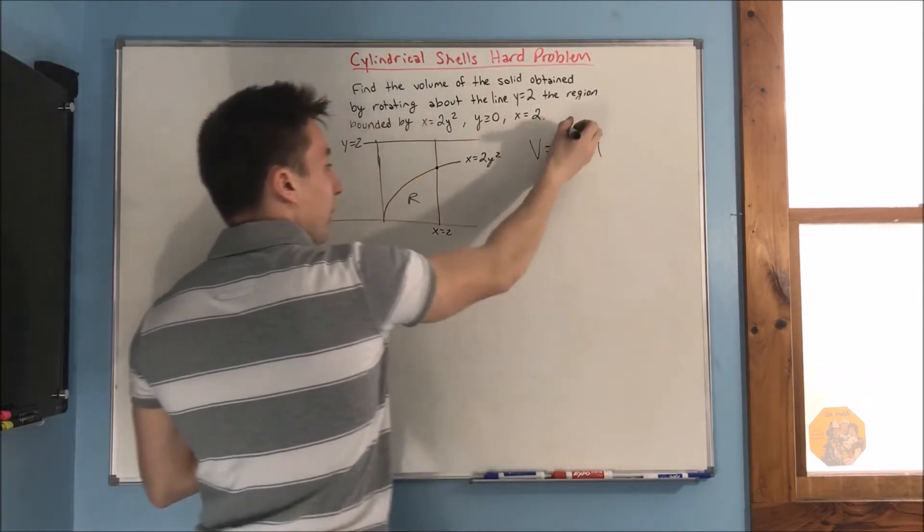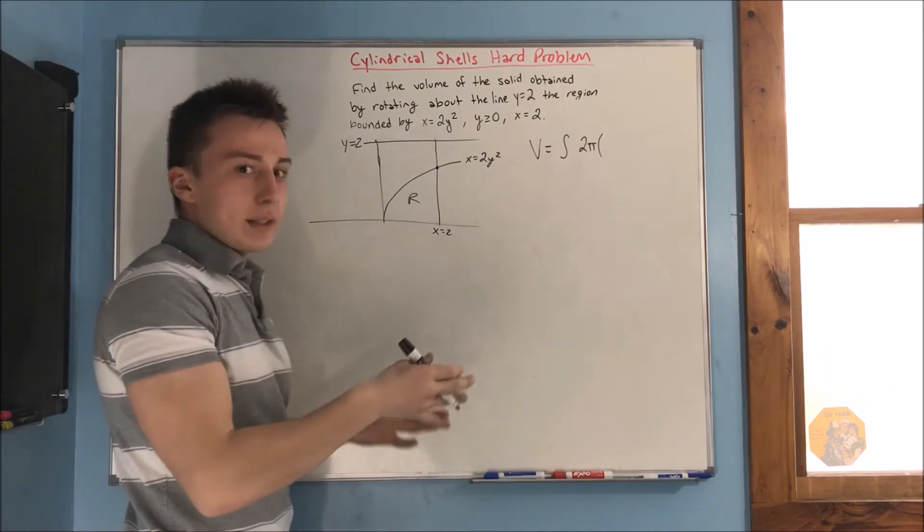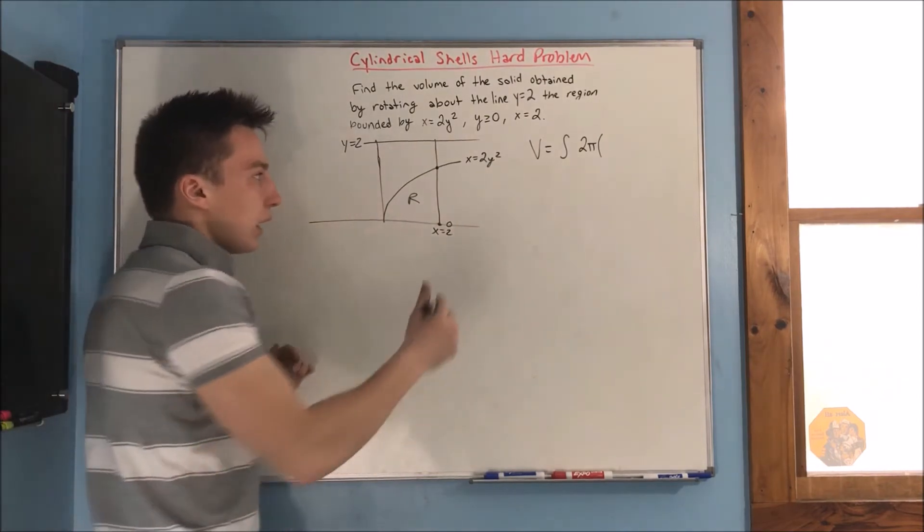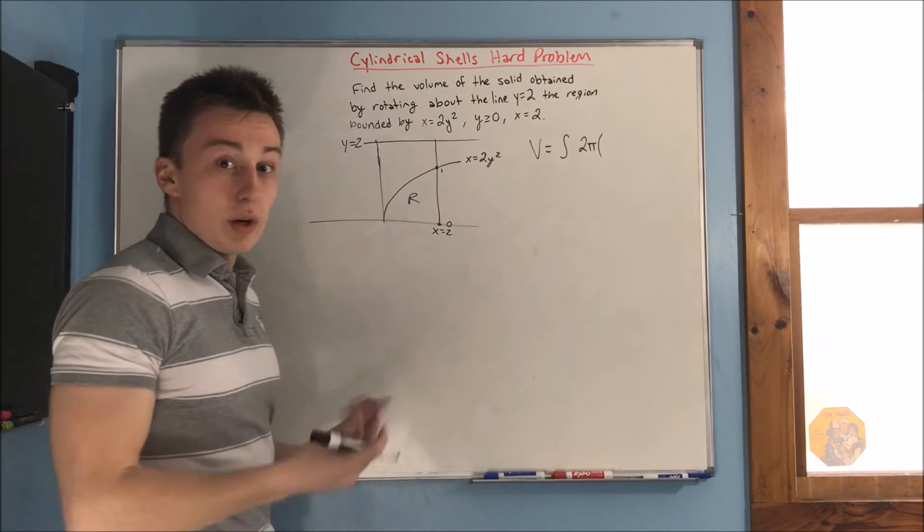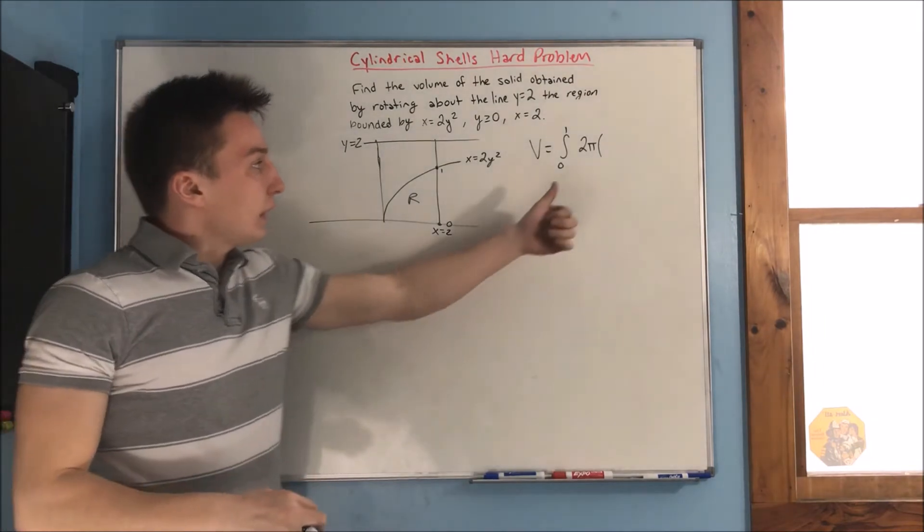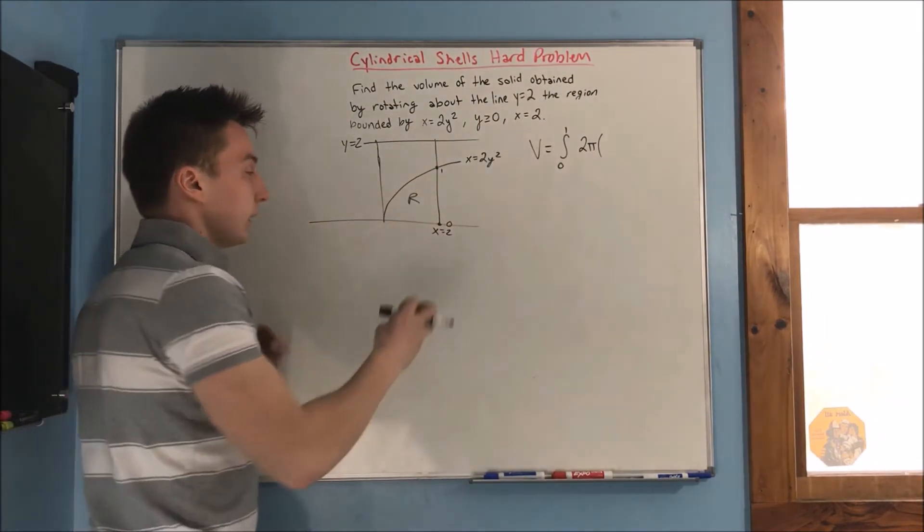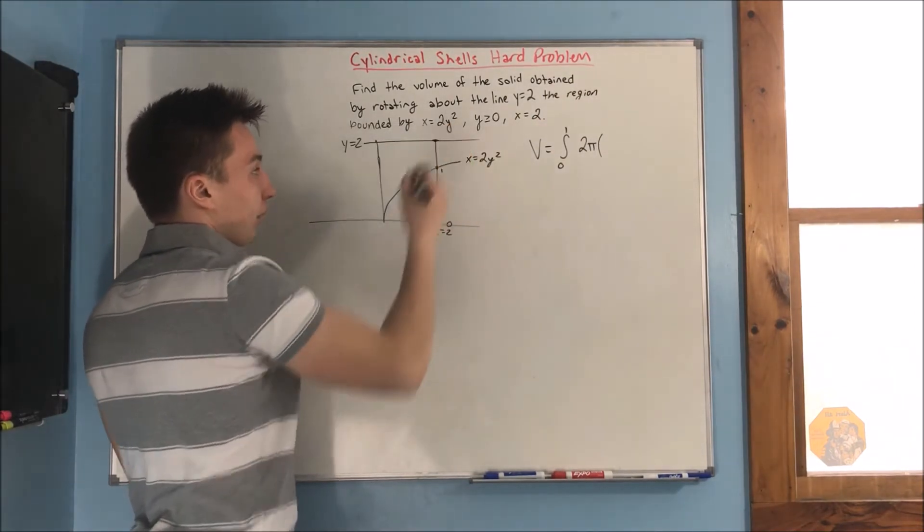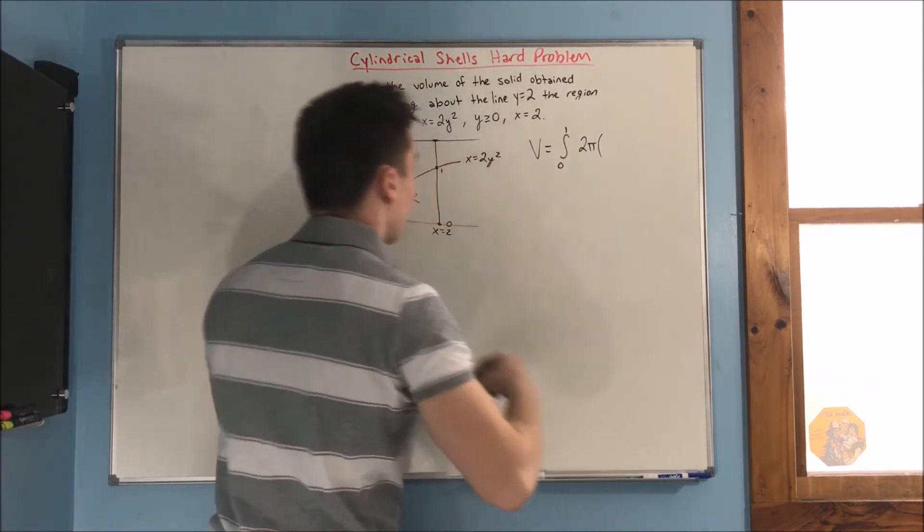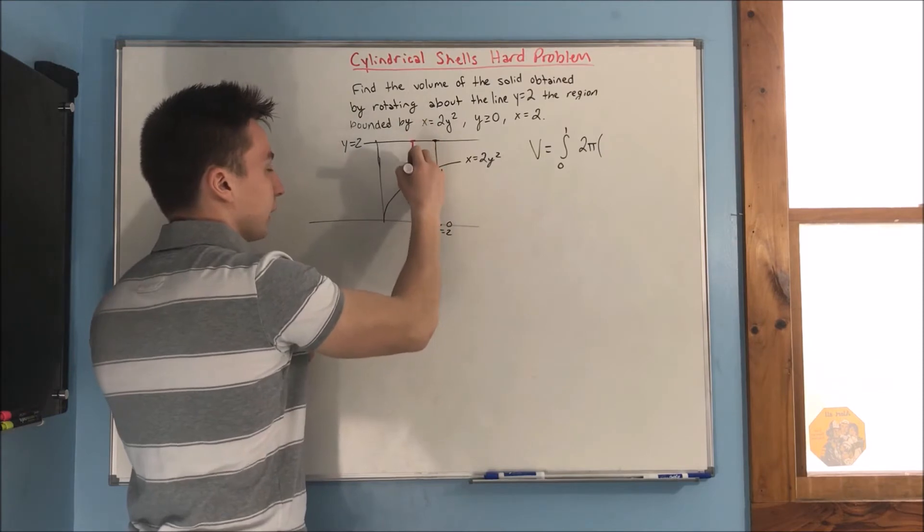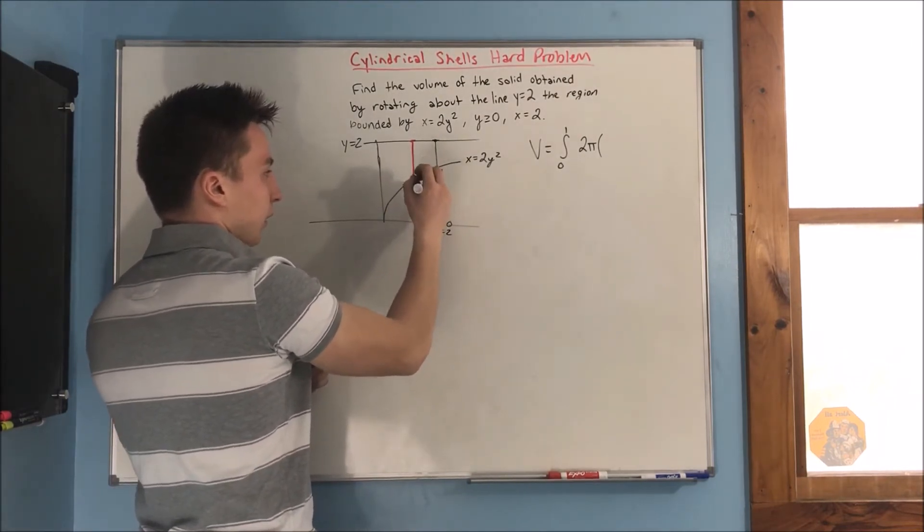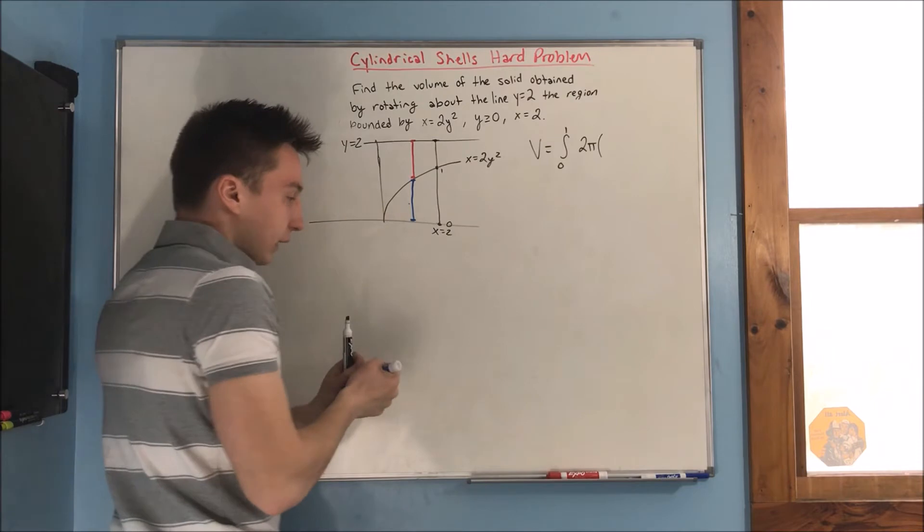So, what are the y coordinates, what are the min and max y coordinates of my region? Well, this, of course, is going to be the min, which is at y equals 0. And then, this top here, we just found that to be 1. So, we already know, our bounds are going to be from 0 to 1. Okay?